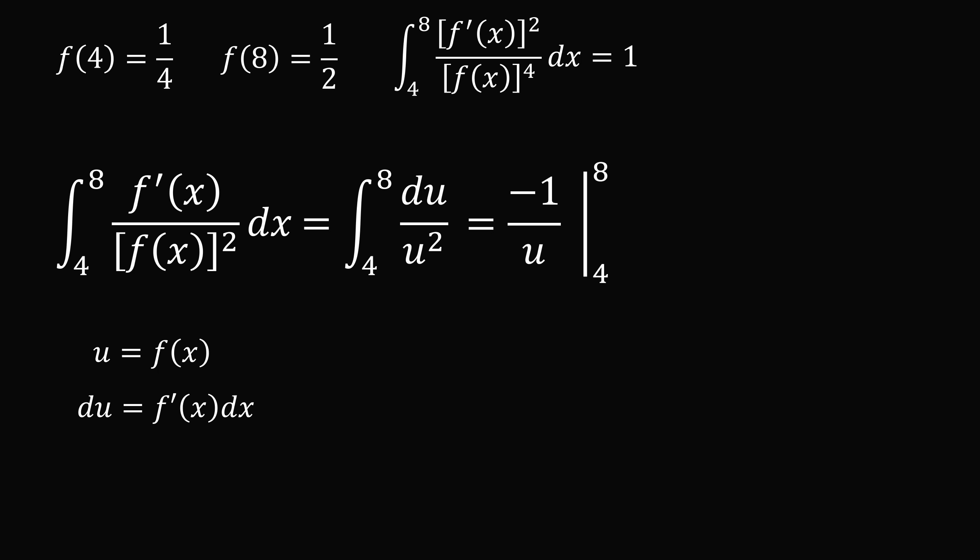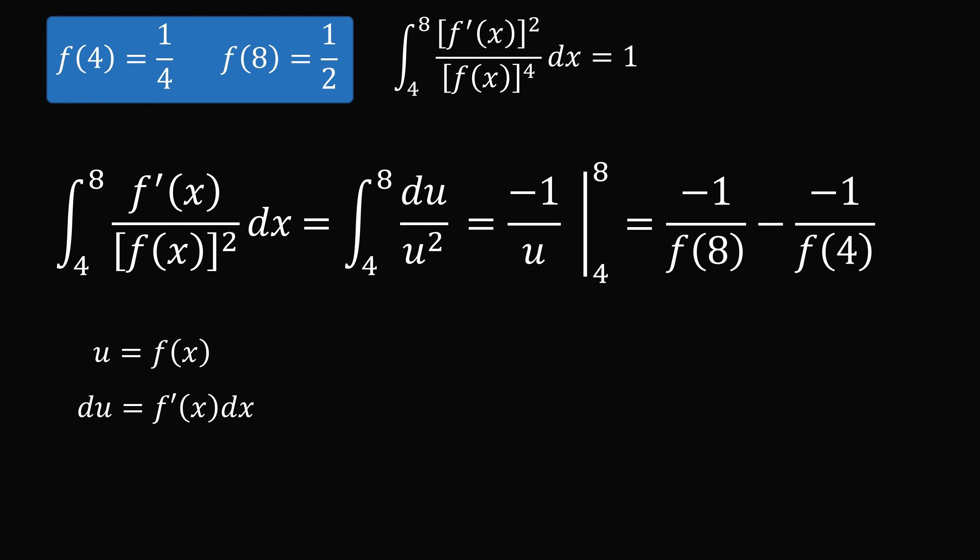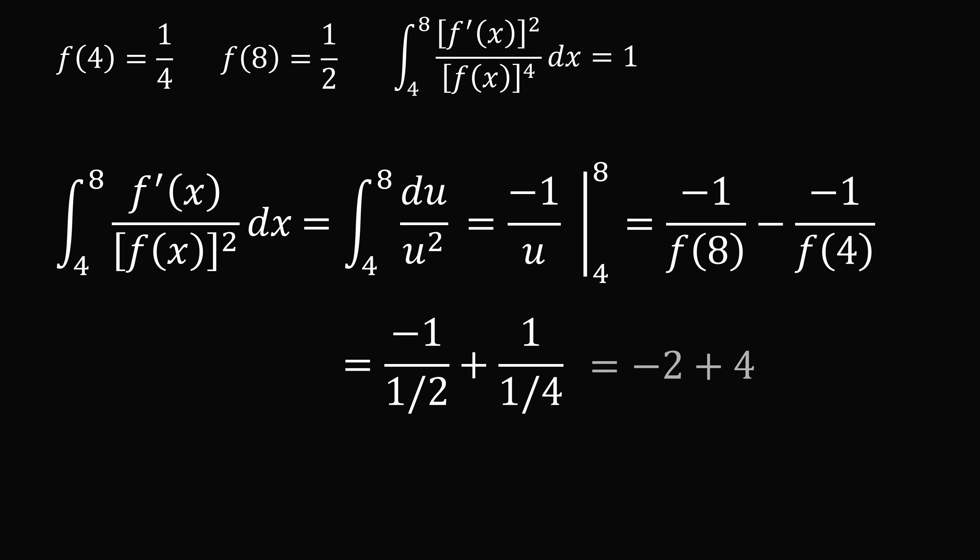So this integral becomes the integral from 4 to 8 of du over u², which is equal to negative 1 over u from 4 to 8. We substitute and then simplify. We know the values of f(4) and f(8). So we substitute in, and we get that this integral is equal to negative 2 plus 4, which is equal to 2.